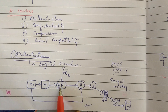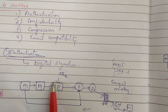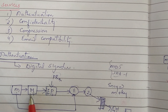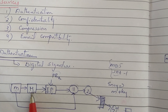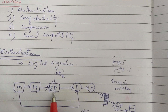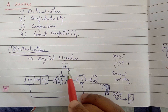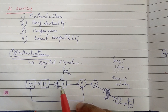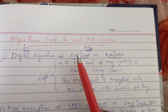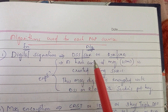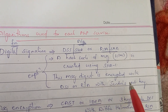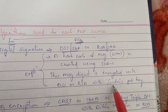We use public key encryption. The hash code is encrypted using DSS or RSA. The hash code of the message is created using the SHA-1 algorithm, and this message digest is encrypted with DSS or RSA using the sender's private key to form the digital signature.